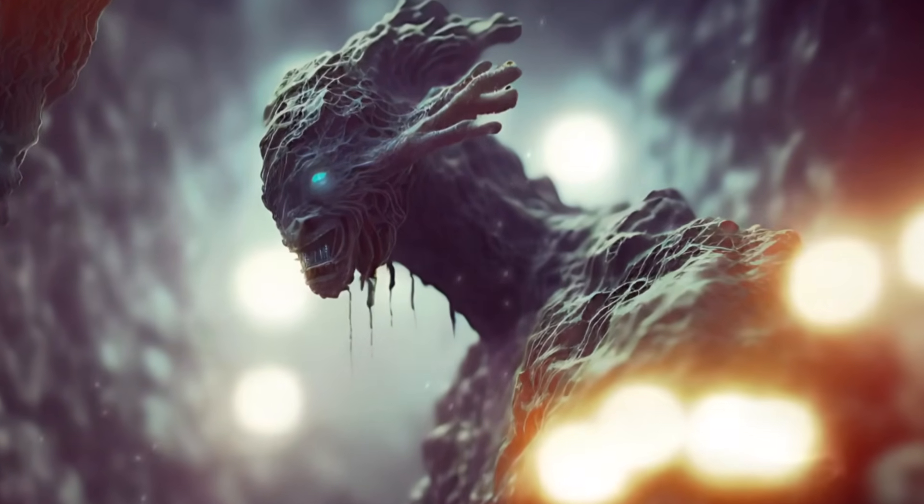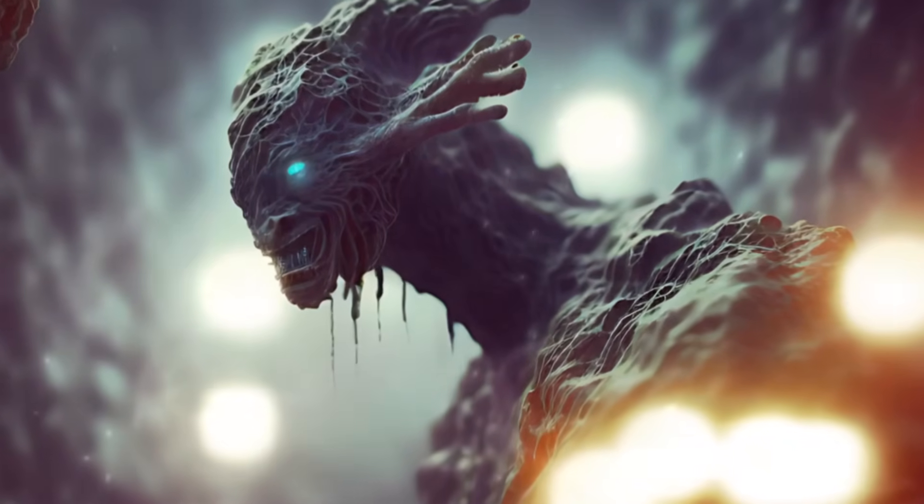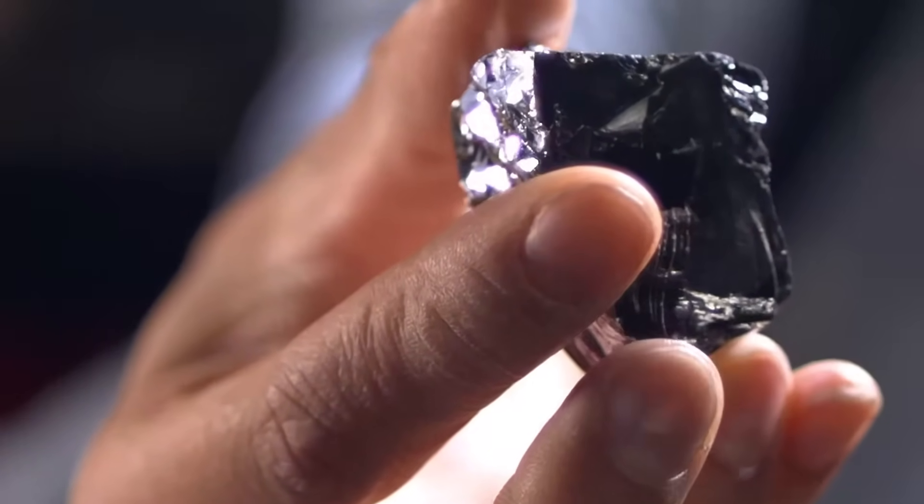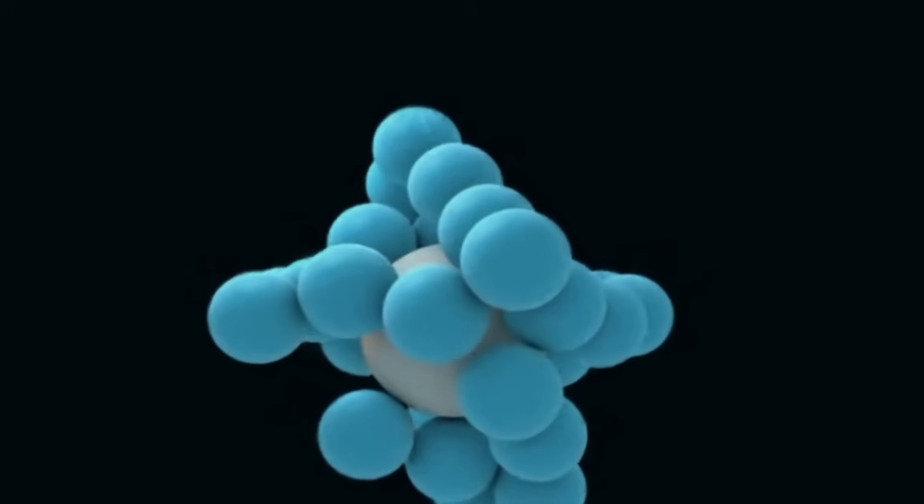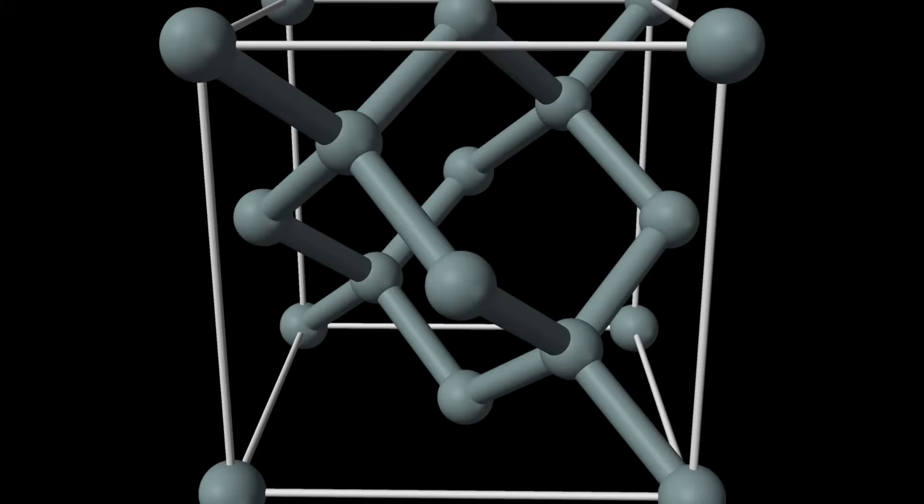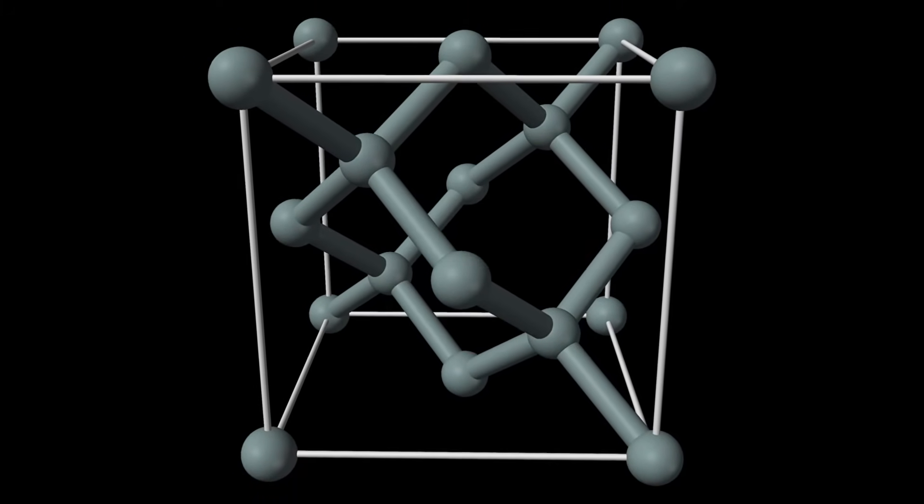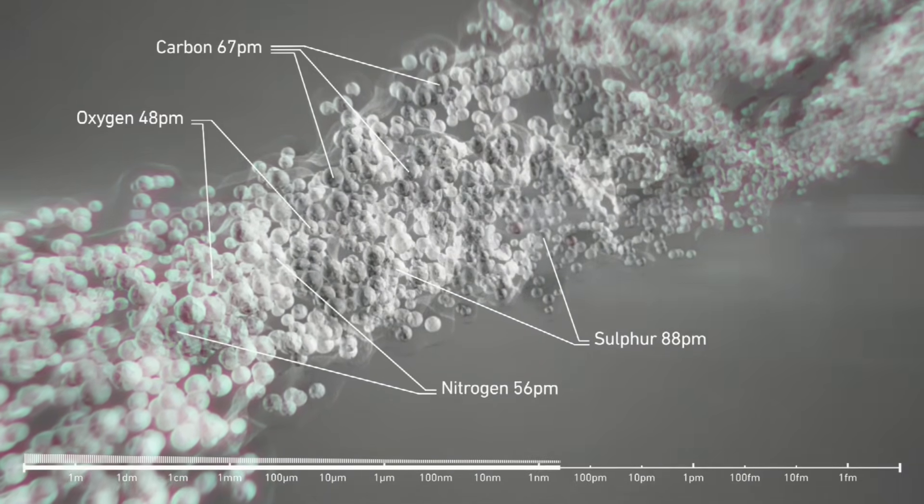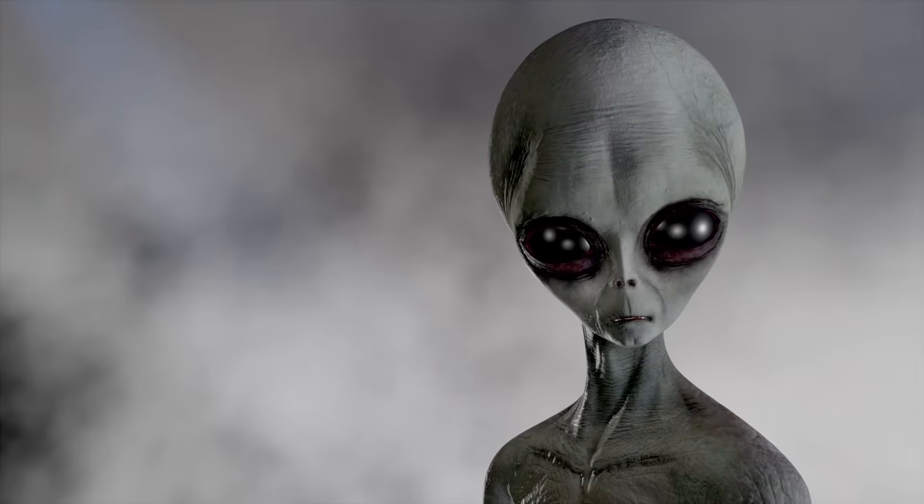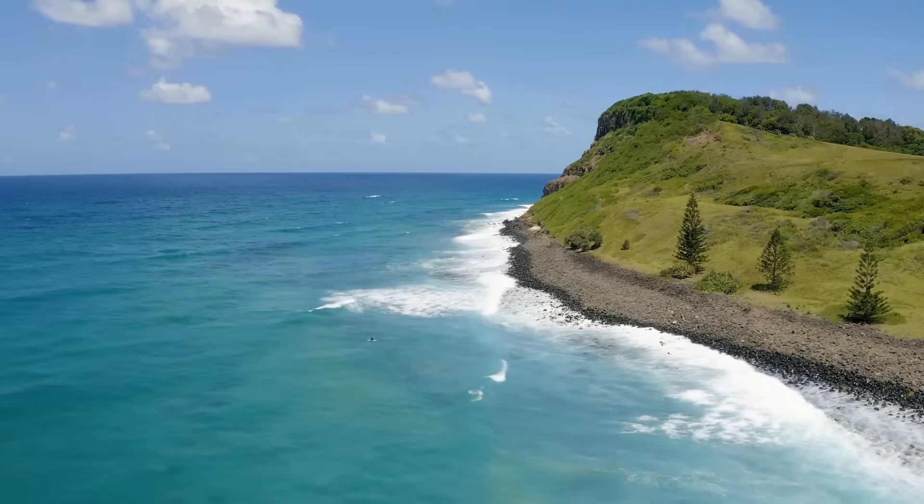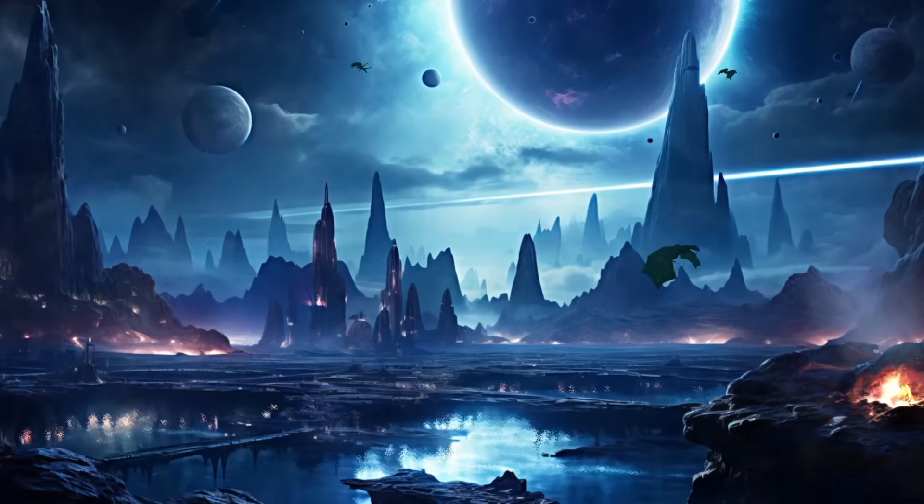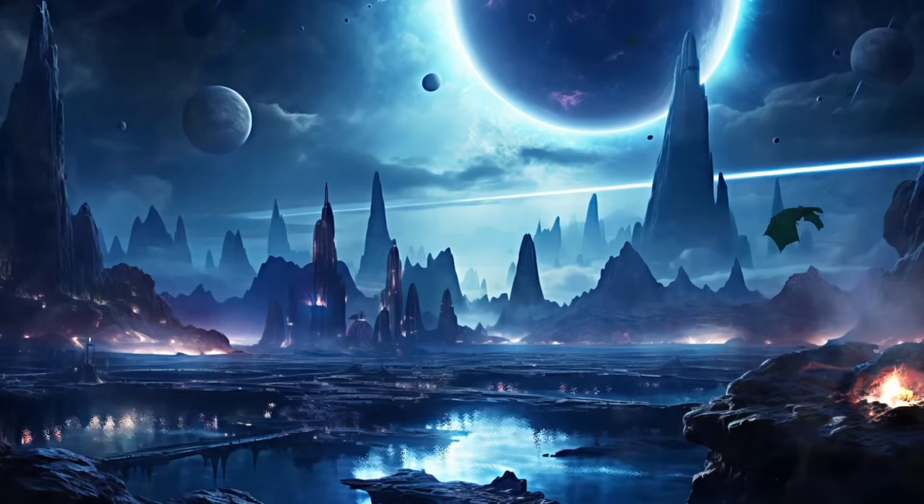However, silicon-based life also presents significant challenges. Unlike carbon, silicon is larger and less flexible in forming different types of chemical bonds and compounds. This rigidity may hinder the versatility needed for the wide variety of chemical reactions necessary for life processes. Additionally, silicon-based compounds are less stable in aquatic environments than their carbon-based counterparts, which can create difficulties in maintaining biological systems.